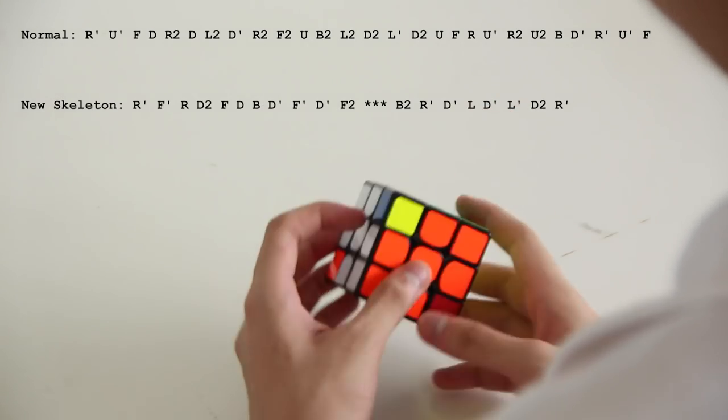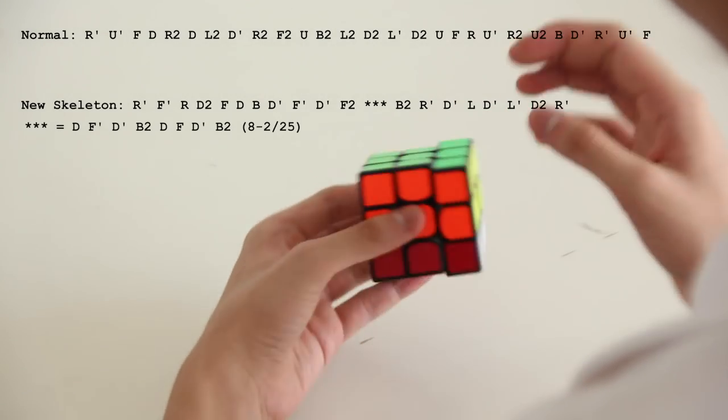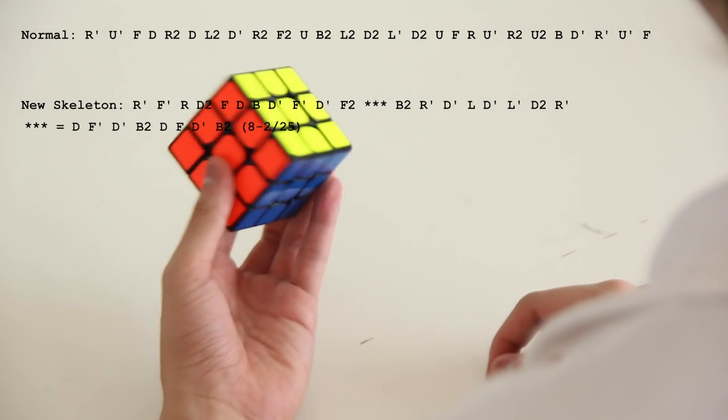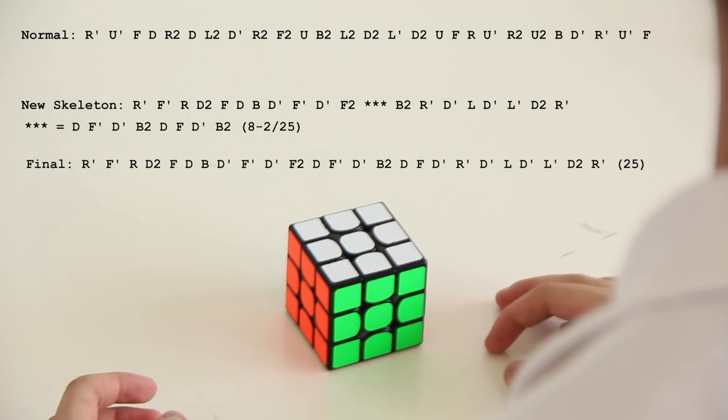And finally at this spot, D', F', D', B2, D', F, D', B2 cancels 2 moves, which gives me a final solution of 25 moves, which is good.